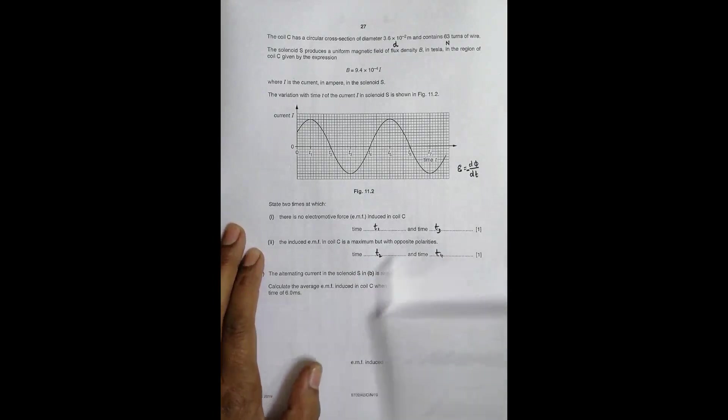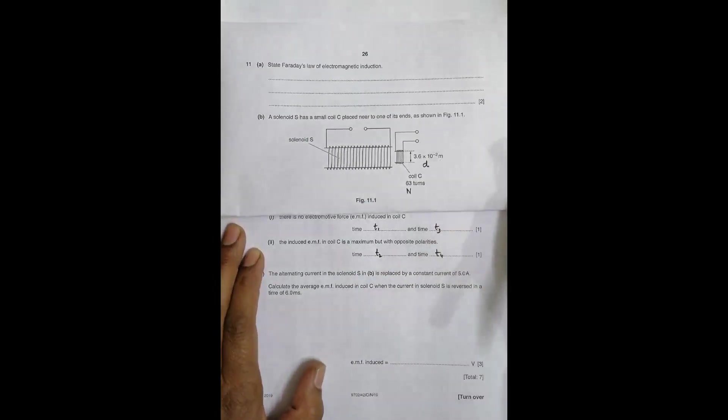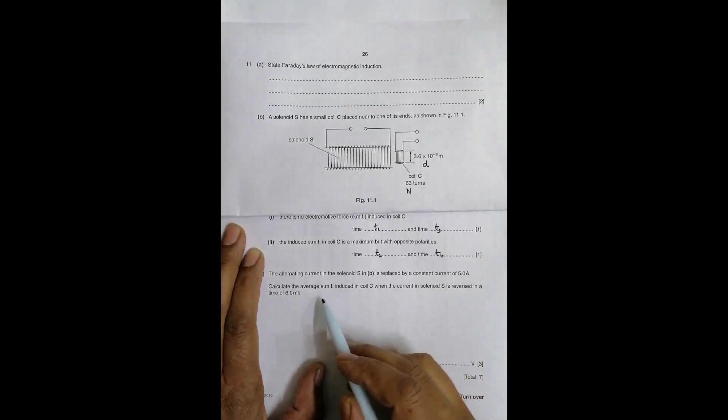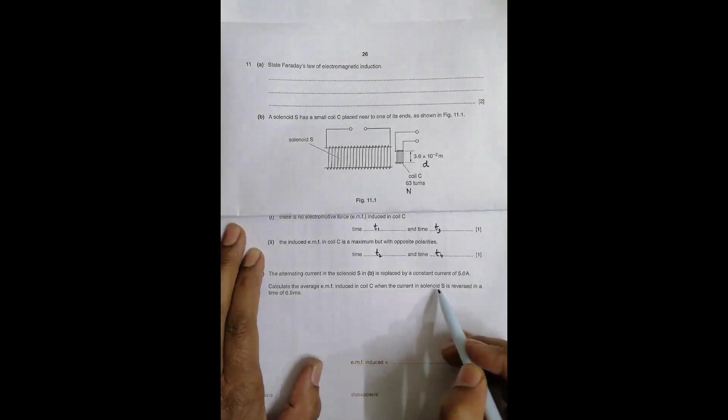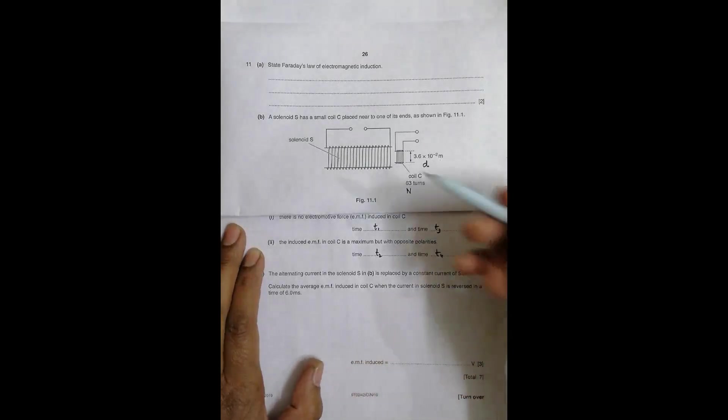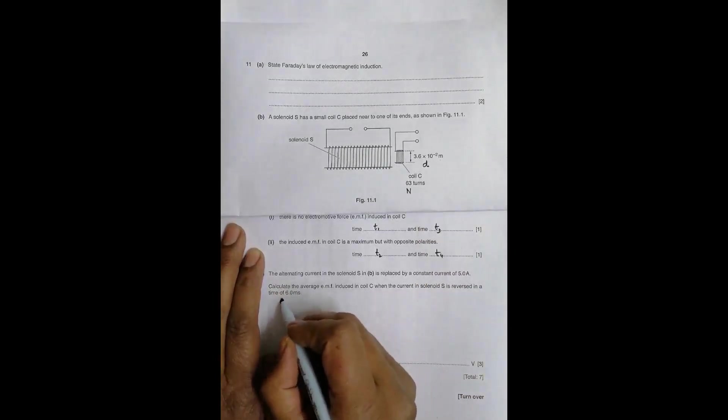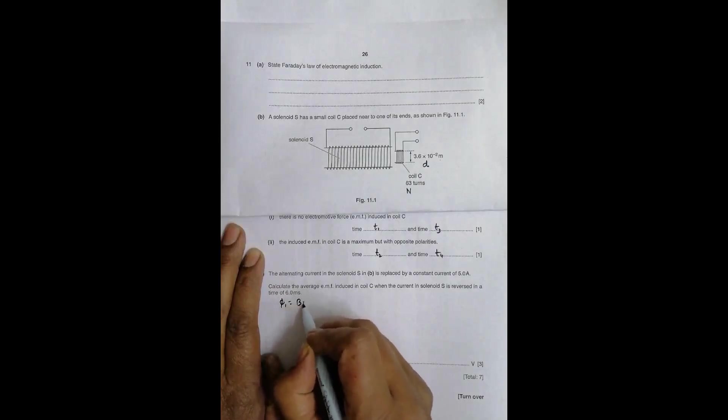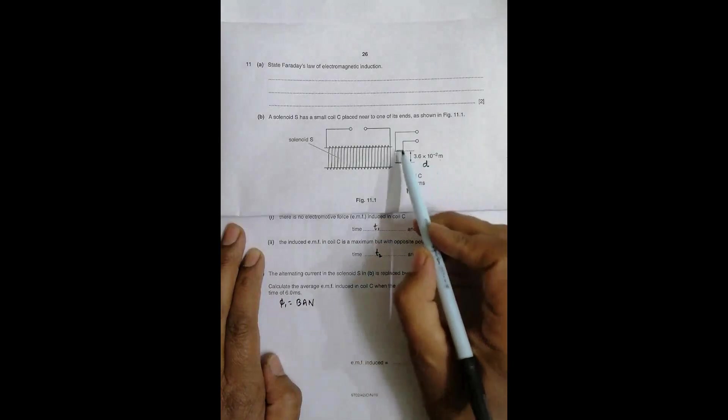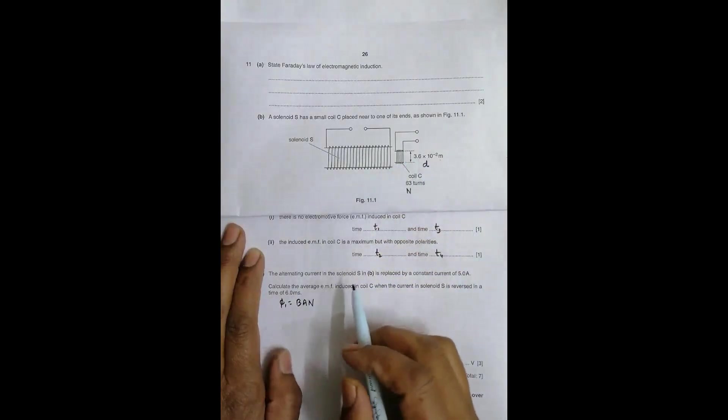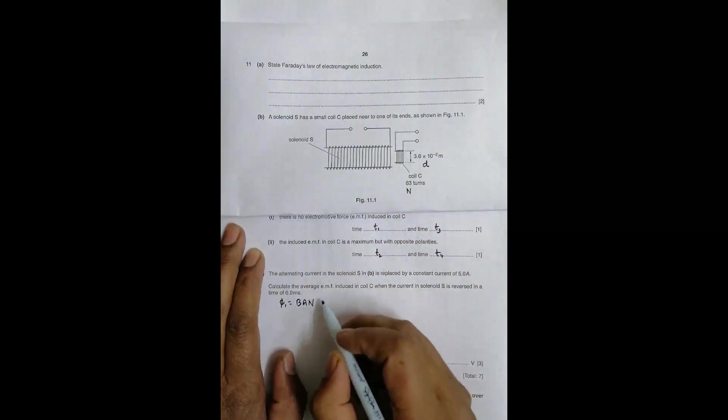The alternating current in solenoid S is replaced by a constant current of 5 ampere. Calculate the average EMF induced in coil C when the current in solenoid S is reversed in a time of 6.0 milliseconds. Initial φ₁ = B × A × N, with angle as zero.